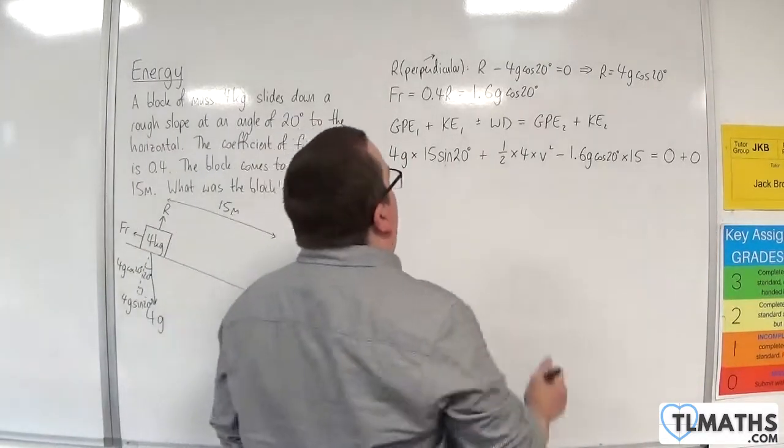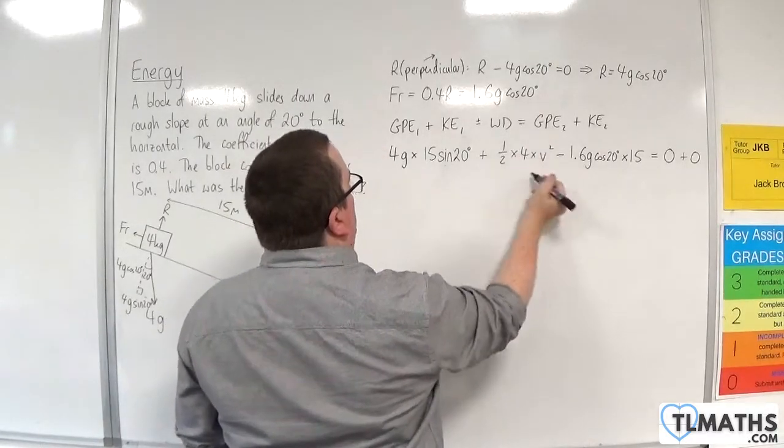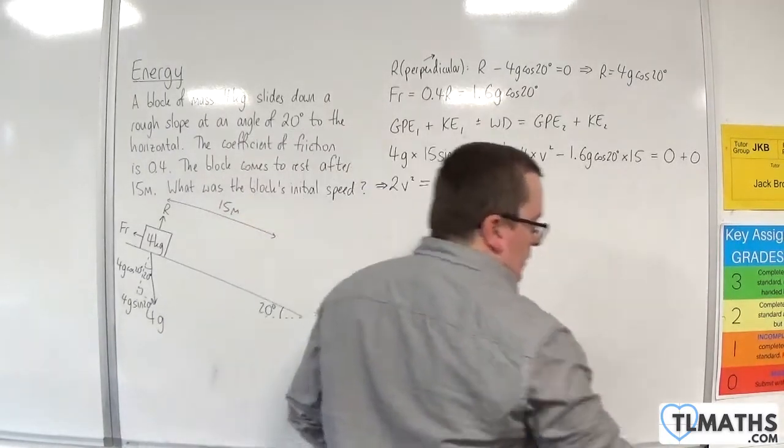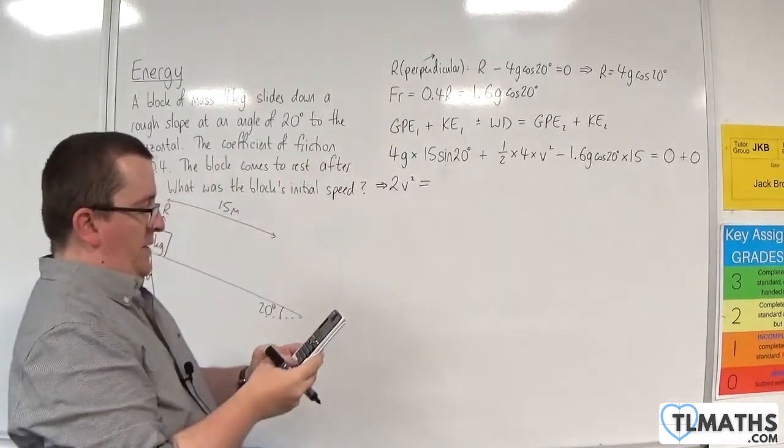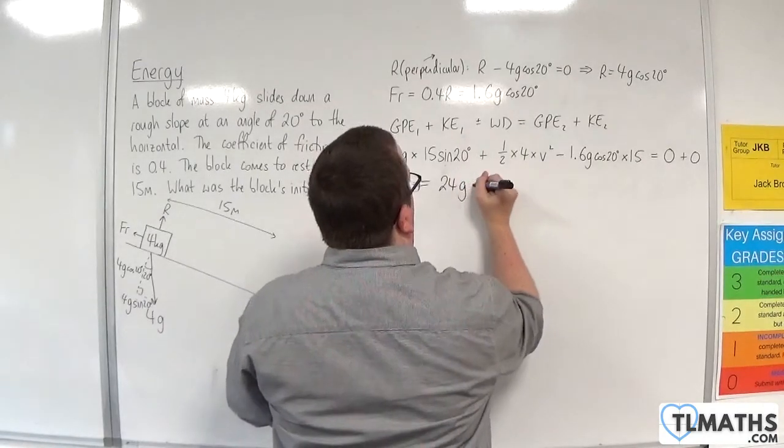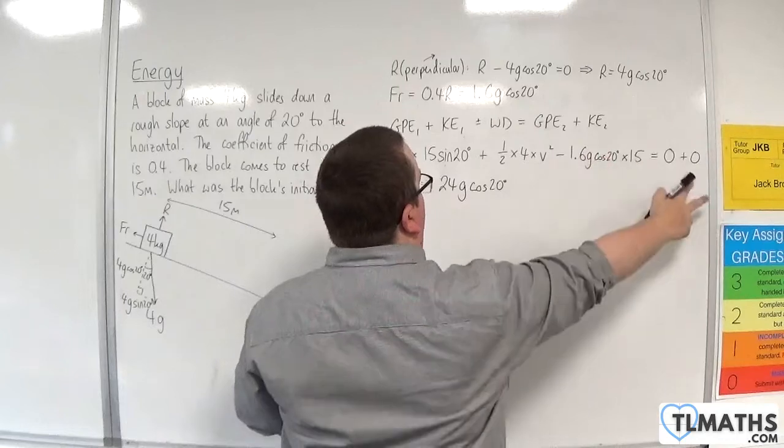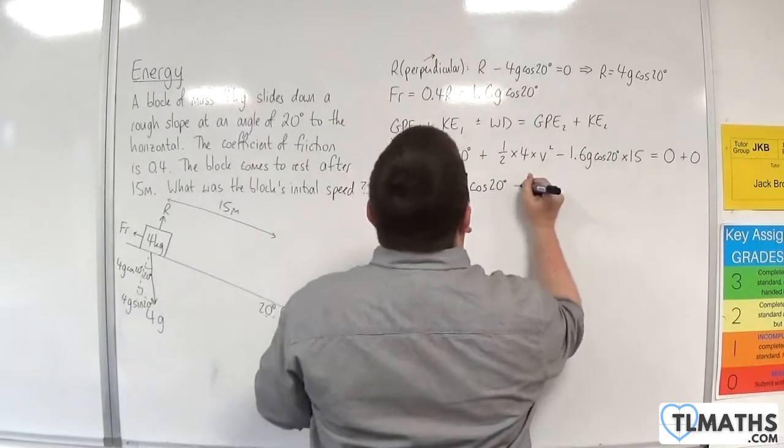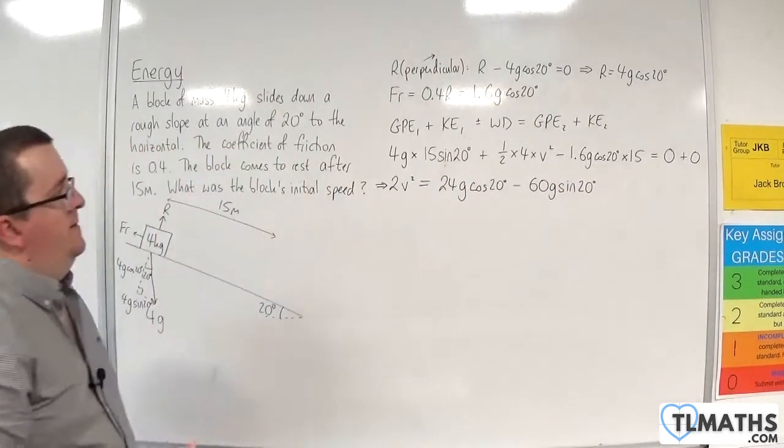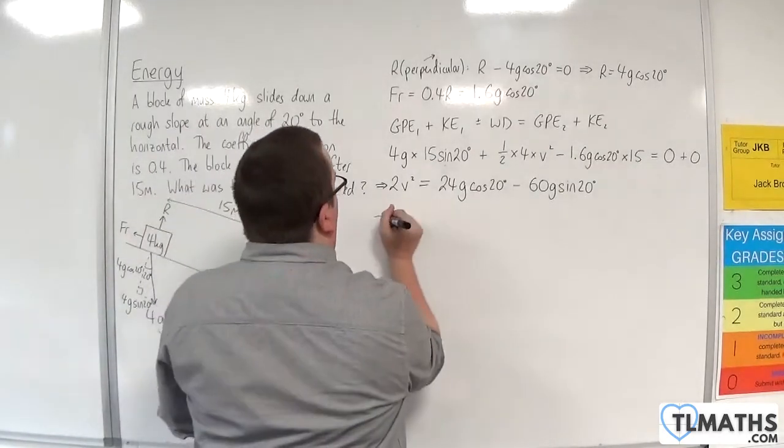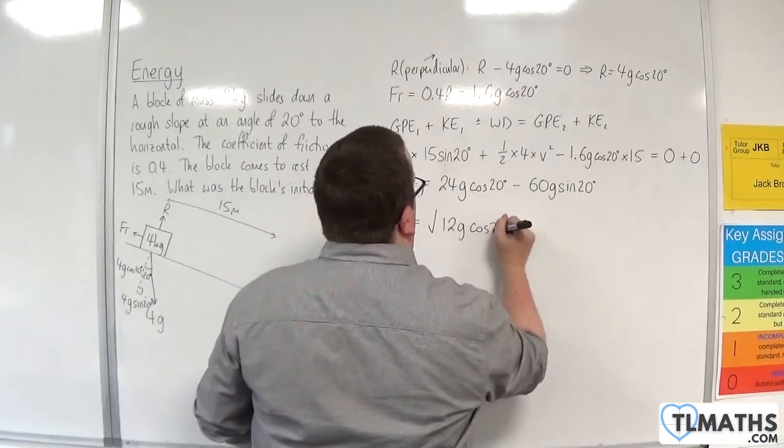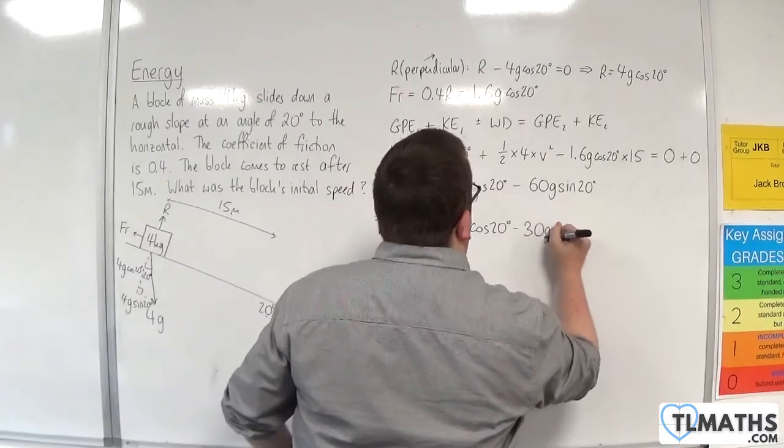So we have 2V squared is equal to, let's pop this in. So 1.6 times 15, so 24g cos 20. So moving that onto the other side, and then take away 60g sin 20. Okay, so divide through by 2 and then square root. So V will be the square root of 12g cos 20 take away 30g sin 20.